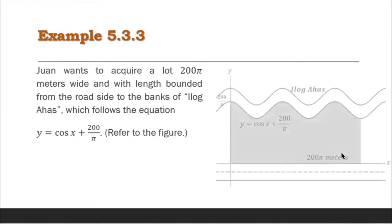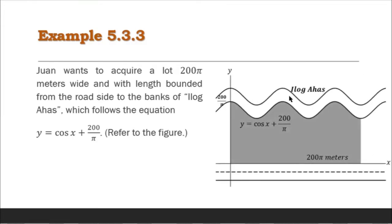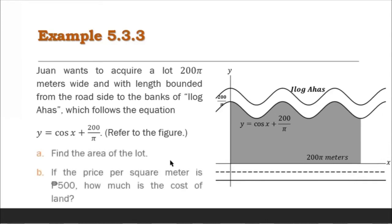Refer to the figure. This is Ilog Ahas, shaped as cosine x plus 200 over π. The land being purchased is 200π meters wide. It is beside the road, and this is the gray shaded region — our assumed measurement of the land. Our target is to find the area of the lot.